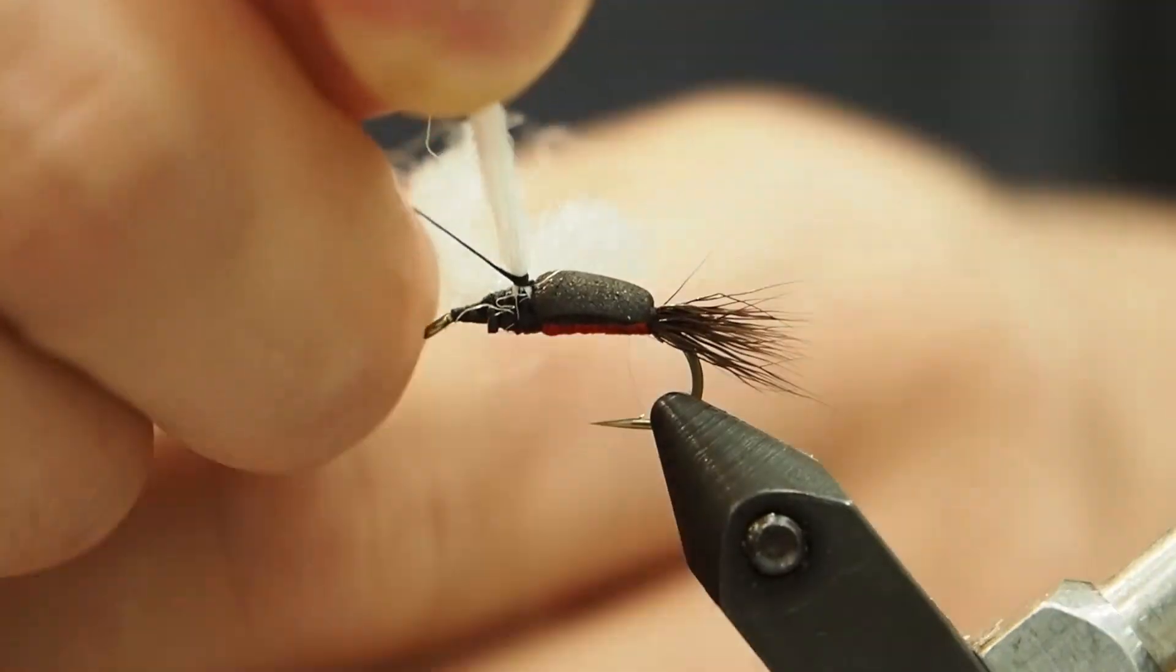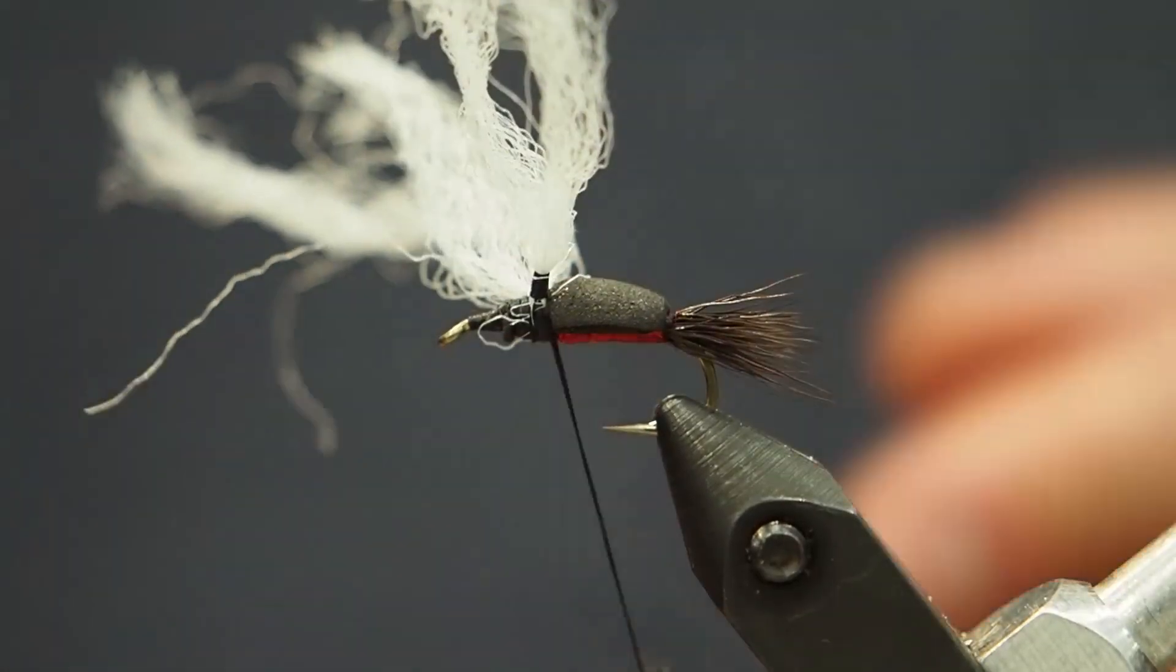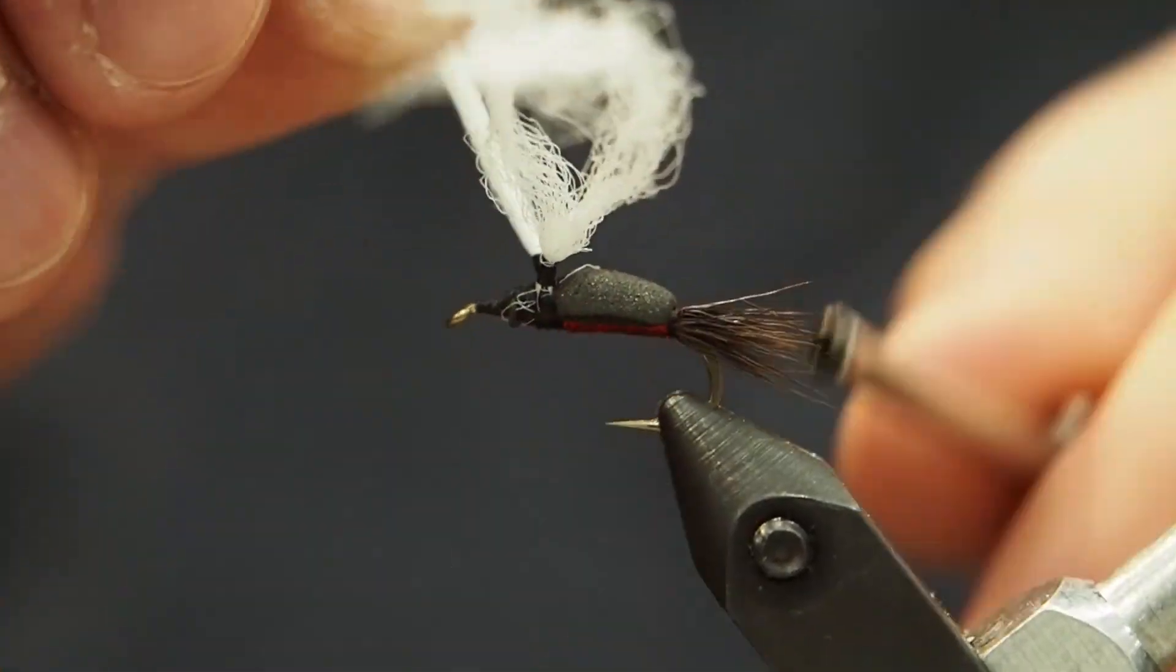You got to go nice and loose and just build up about two millimeters of post. Now I'm going to do the other post there, and we're going to get that nice sort of wing facing 45 degrees off either side of the hook.